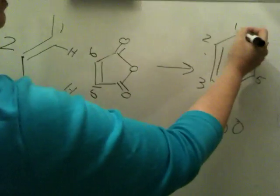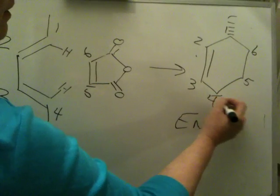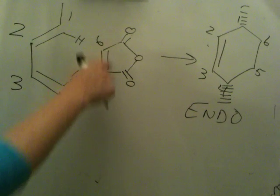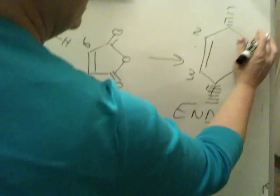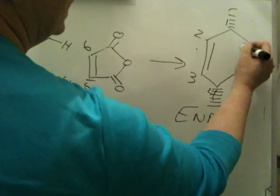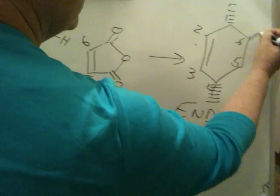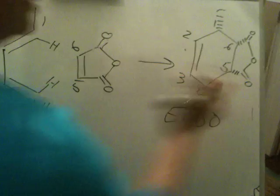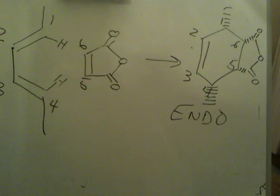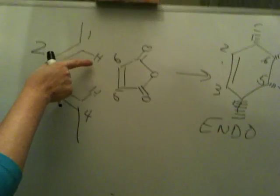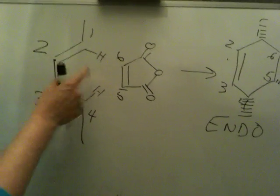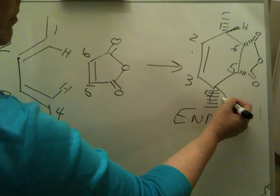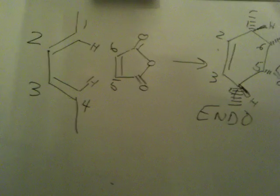So, supposing I put the methyls back. These are the outer positions. I want to put the outer positions, cis, with respect to this. So, let me move my numbers a little bit here. Six, five. All I'm trying to do is draw endo. The other way to do it is to have these two hydrogens be trans with respect to those groups. That's endo.